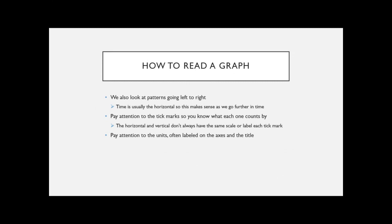So how to read a graph. The key when we read graphs is we read them left to right. A lot of people don't realize that we do a lot of things left to right, and the same thing applies to graphs — we go from the left part of the graph to the right. This makes sense because a lot of the time you're graphing things over time, and as you move to the right you're getting to more recent time.